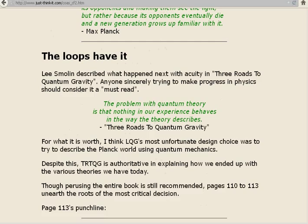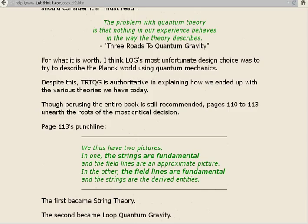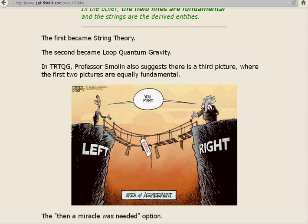Page 113's punchline. We thus have two pictures. In one, the strings are fundamental, and the field lines are an approximate picture. In the other, the field lines are fundamental, and the strings are the derived entities. The first became string theory, the second became loop quantum gravity. In Three Roads to Quantum Gravity, Professor Smolin also suggests there is a third picture, where the two pictures are equally fundamental. The then-a-miracle-was-needed option.